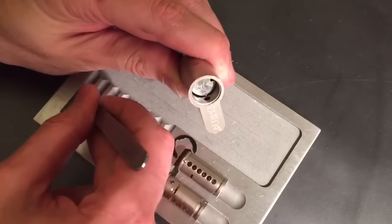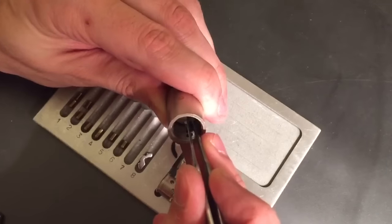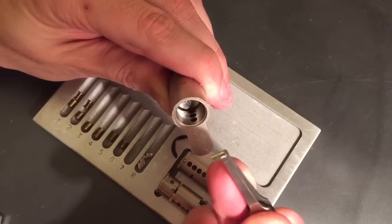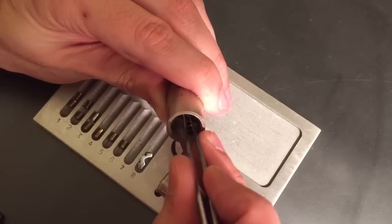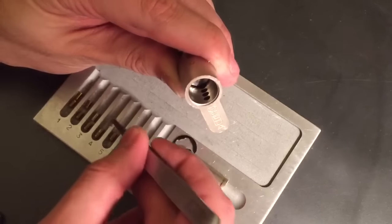Number one is a spool. Two is a spool. Three is, not sure what to call that. Looks like a standard but has a little narrowing at the end. Four is a spool.